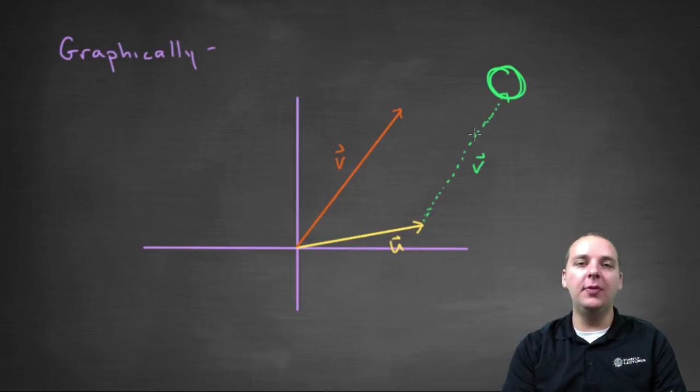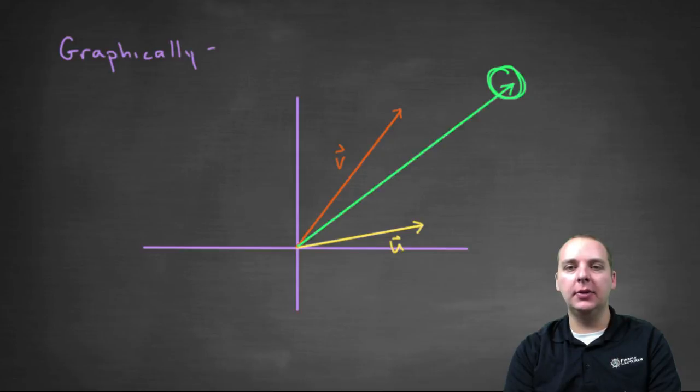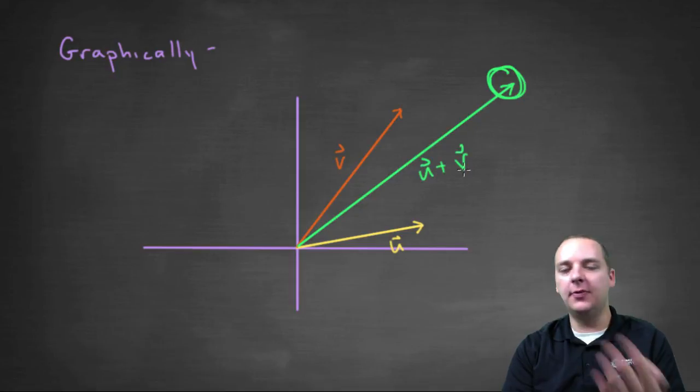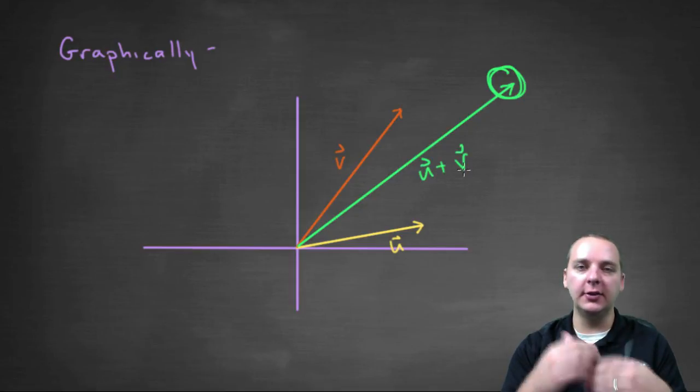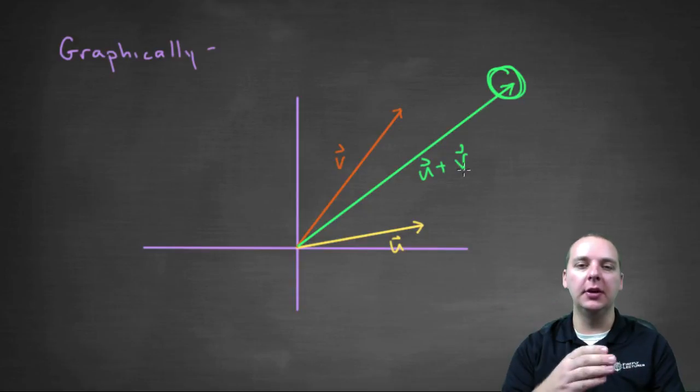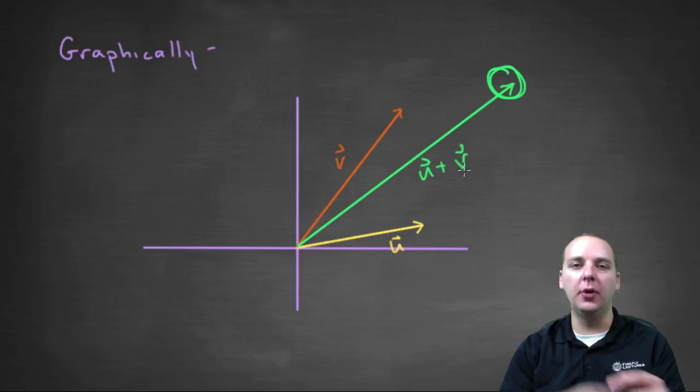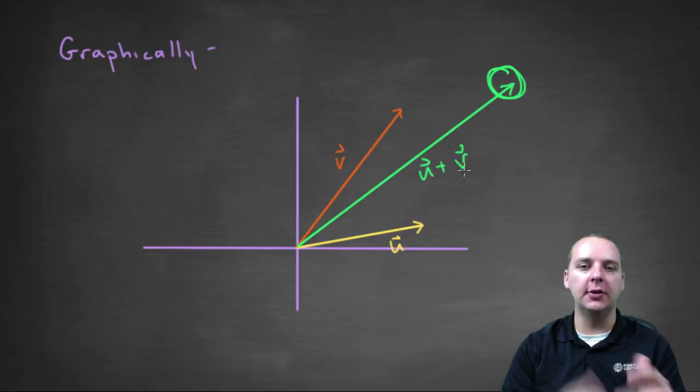Well this reveals what u plus v looks like. So here if I hide this one, this guy right here would actually be u plus v. Not the crooked ones. Vectors aren't crooked. A vector is a vector. It's a straight line segment with an initial point and a terminal point with a magnitude and direction and those sorts of things.